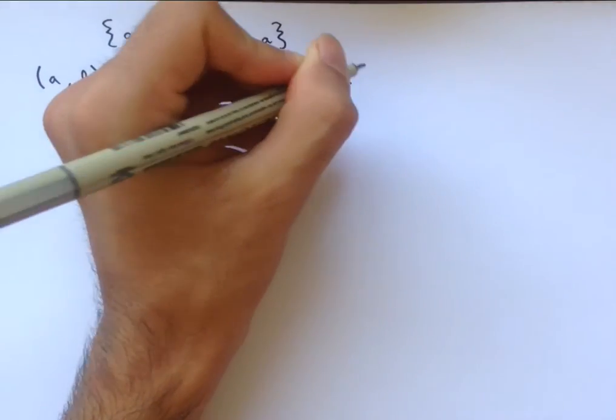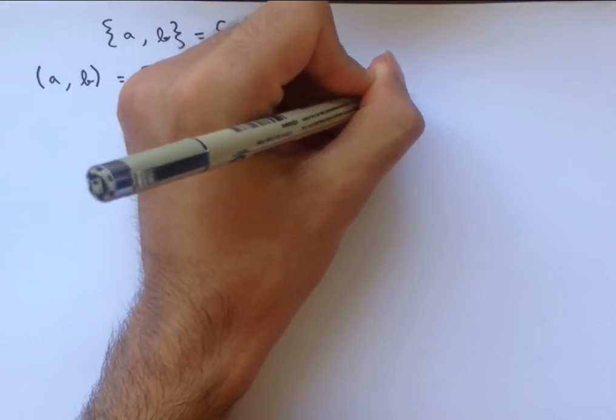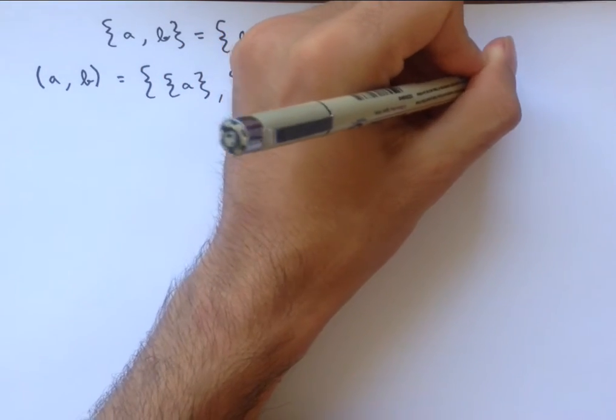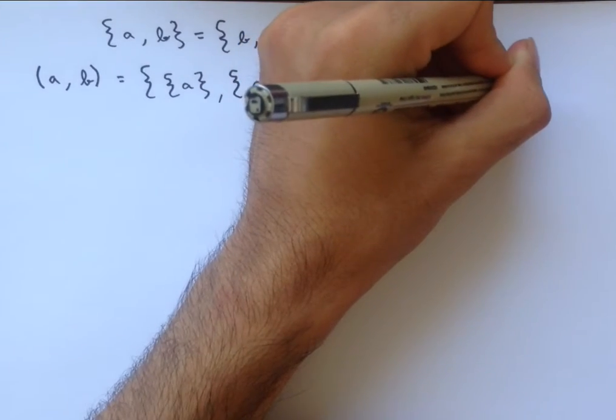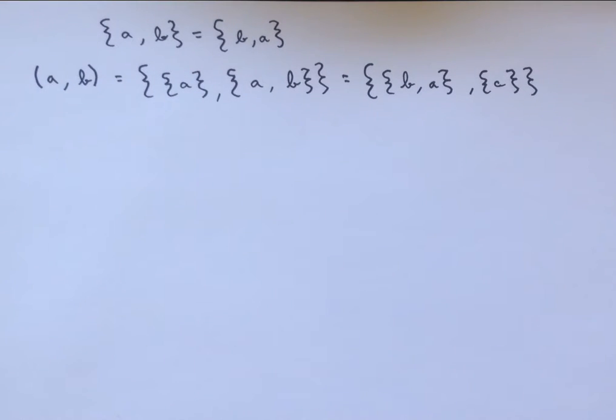And so this is still equal to, for example, the set containing B and A and the singleton A. But we can, in both cases, extract which is supposed to be the first element and which is supposed to be the second element.